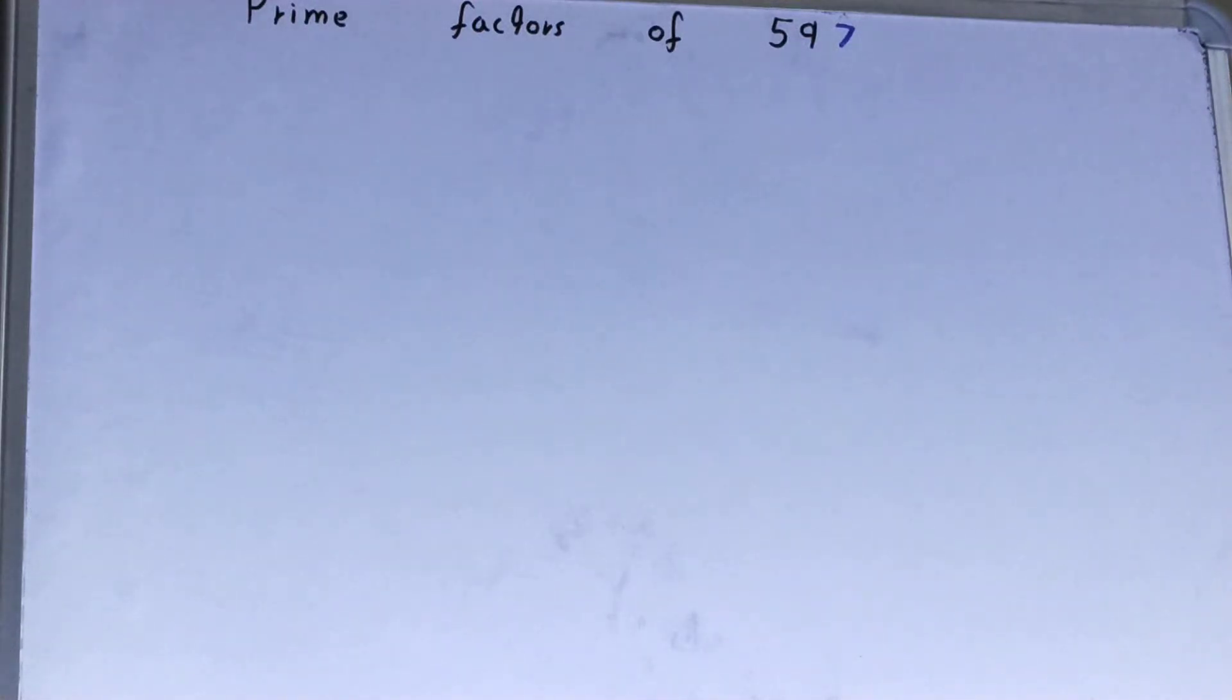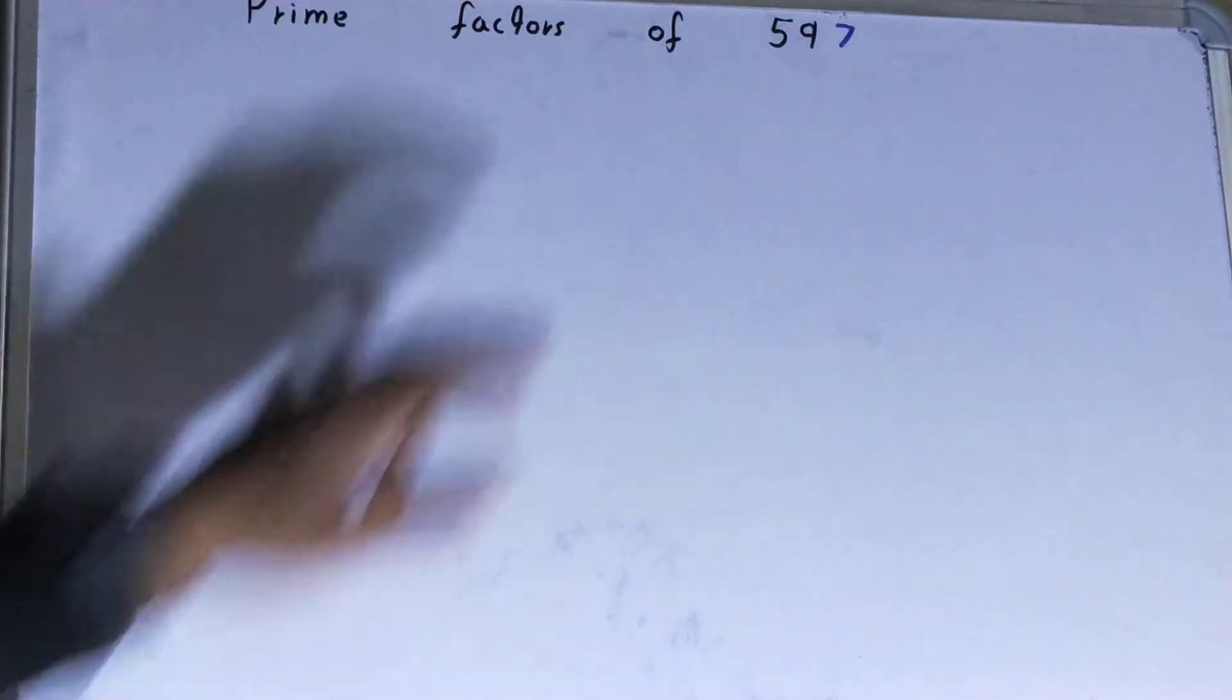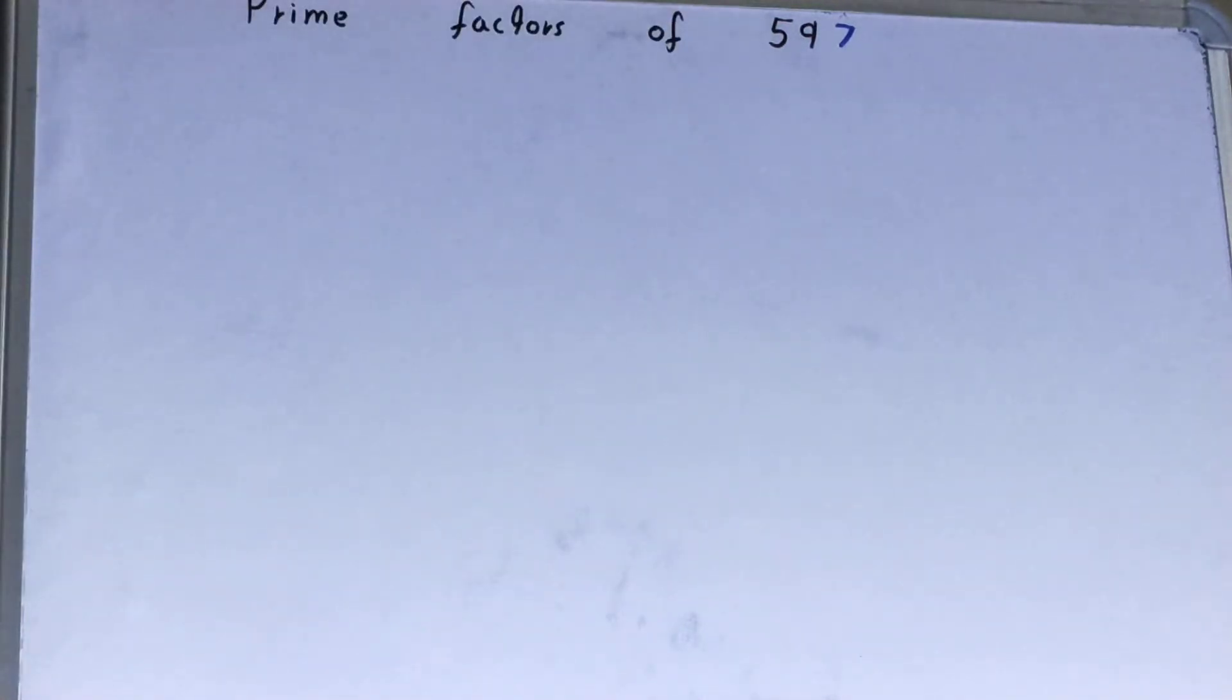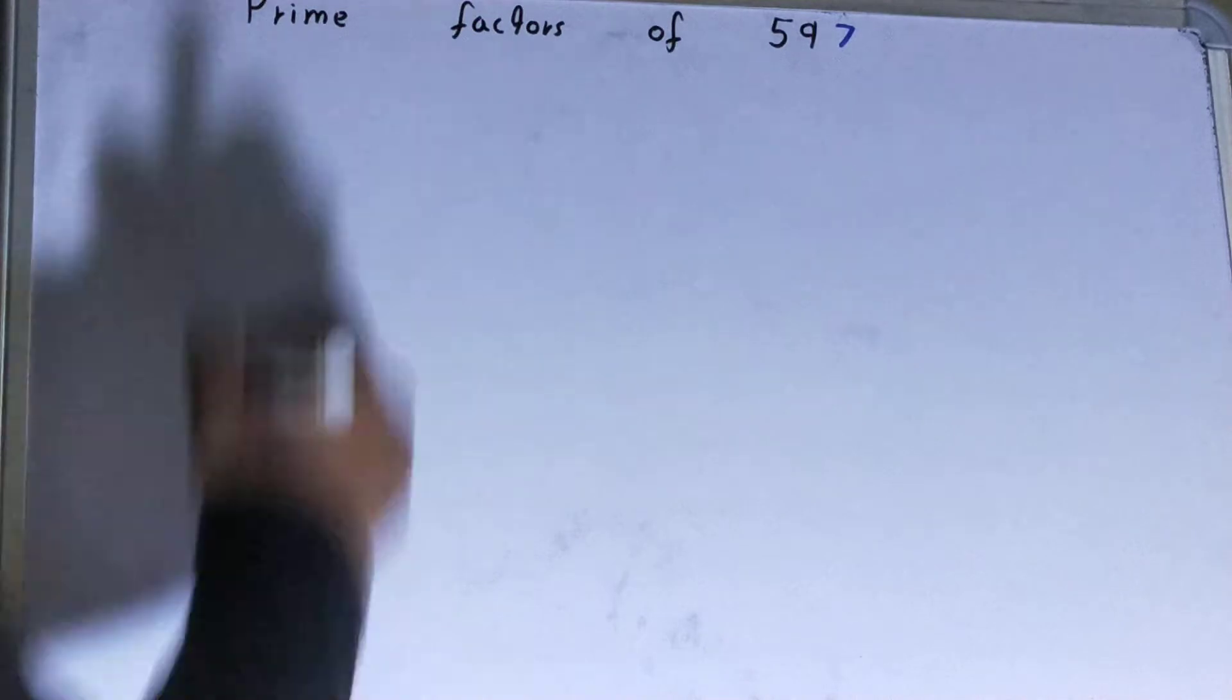Hello friends, in this video I'll be helping you with the prime factors of the number 597. So let's start. To find out prime factors of the number 597, you need to write the number like this.